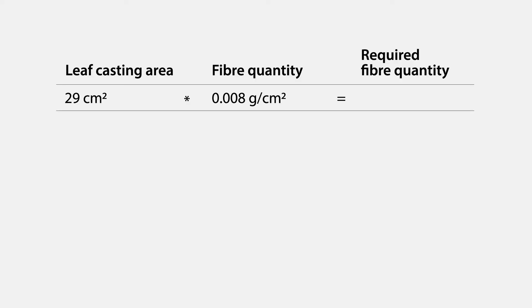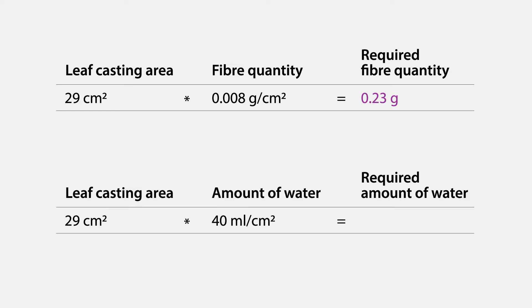The surface area is multiplied by the quantity of fibers required for the thickness of the paper. This means that the leaf casting area of 29 cm² is multiplied by 0.008 grams per square centimeter, resulting in a required fiber quantity of around 0.23 grams. To calculate the amount of water needed, the leaf casting surface is multiplied by 40 ml per square centimeter. The amount of water needed for this quantity of fiber is approximately 1,200 ml.